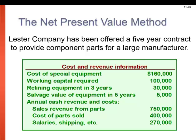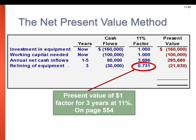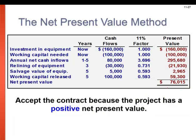Same information, but here we're going to use the annuity table. Because we have the same value coming in from years one through five — $80,000 — using the annuity table, we look up the factor for 11% over five periods and get 3.696 to apply to our cash flows. For all five years combined at $80,000, the present value is $295,680. For the realigning of equipment in year three, that's just a one-time amount, so we go back to the present value table, look up 11% in year three, get our factor, and multiply. The sum of all present values is the same amount: $76,015.